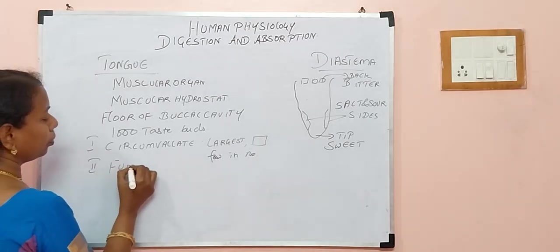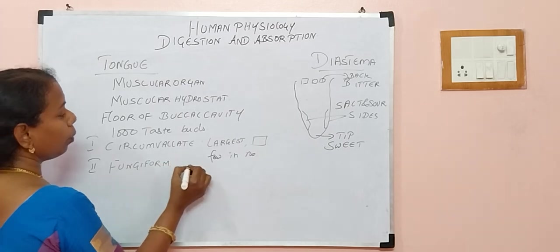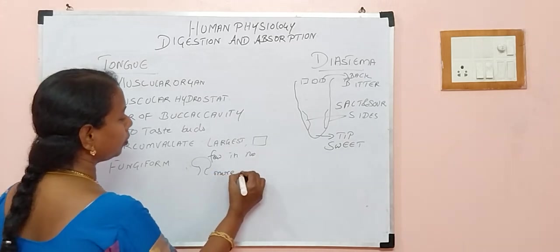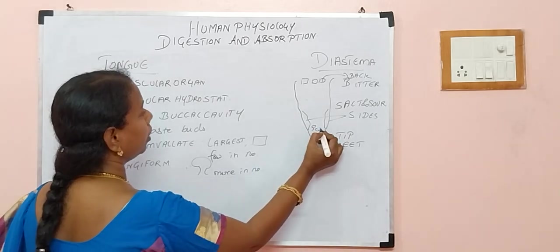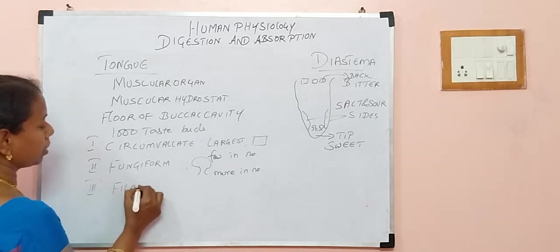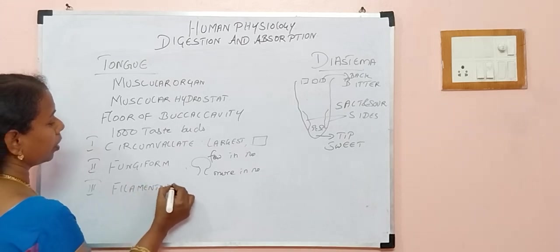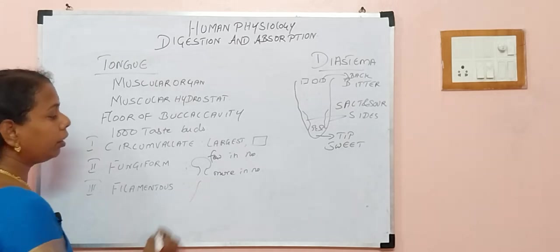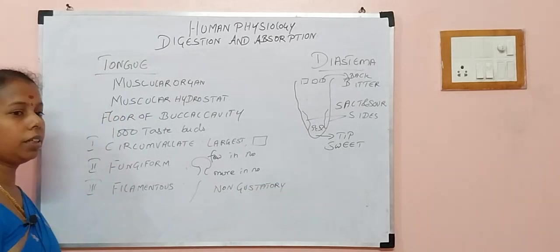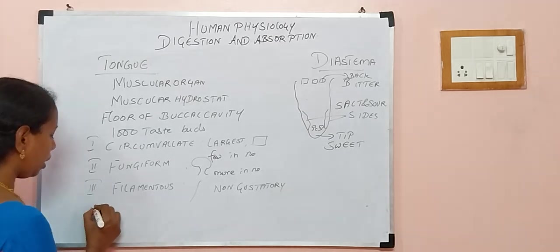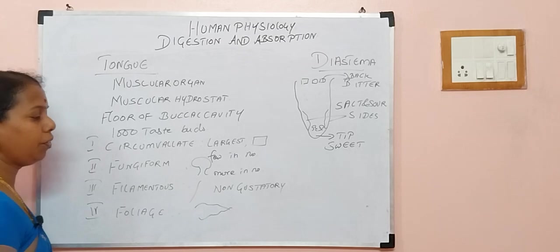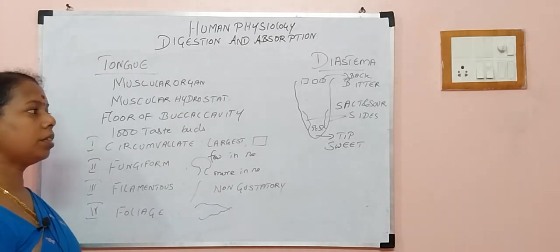The second type is fungiform. Why is it called fungiform? Because it is mushroom-shaped. It is more in number and found in the front of the tongue. The third type is filamentous — as the name implies, it is filamentous in shape and non-gustatory in function, meaning it does not detect any taste. And we also have foliate papillae, which are leaf-like.